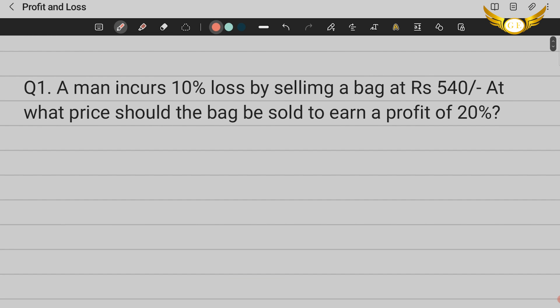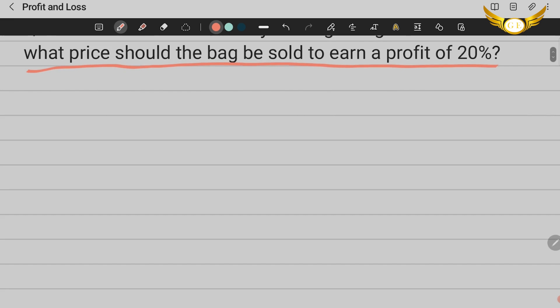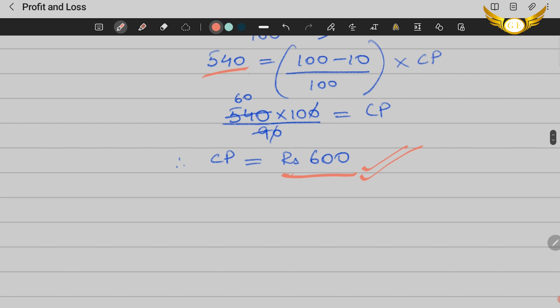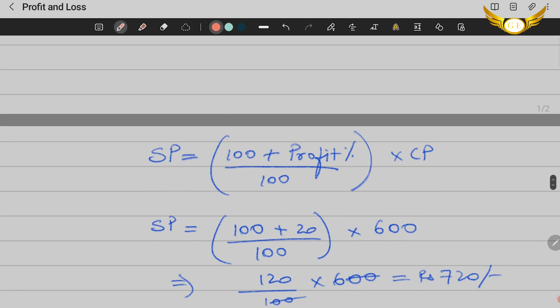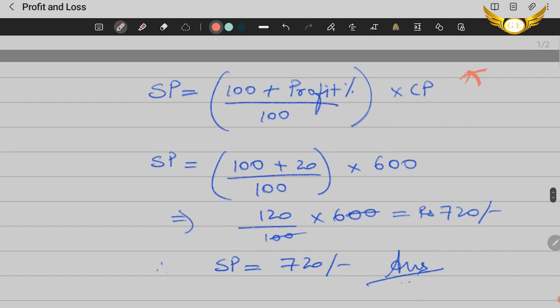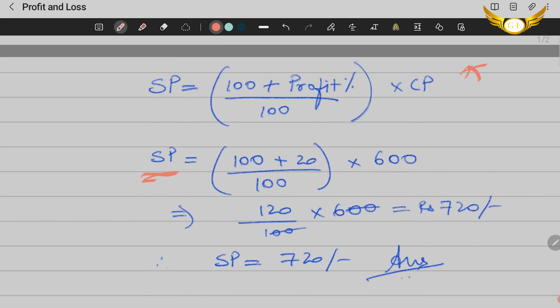Now coming back to the question, at what price should the bag be sold to earn a profit of 20%? We've already got the CP as rupees 600. The formula is: selling price is 100 plus profit percent upon 100 into CP.